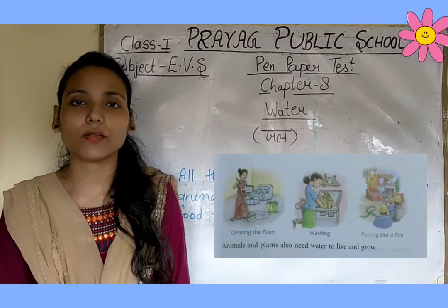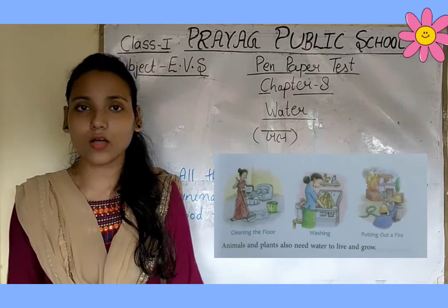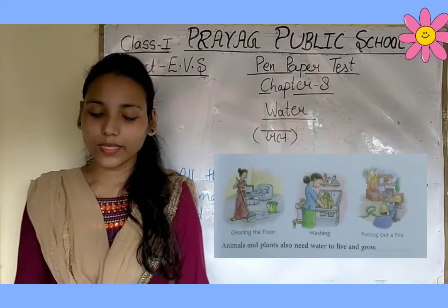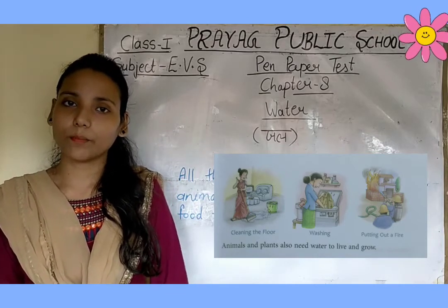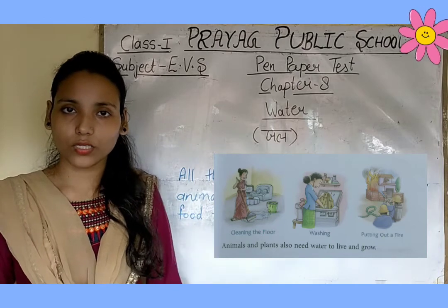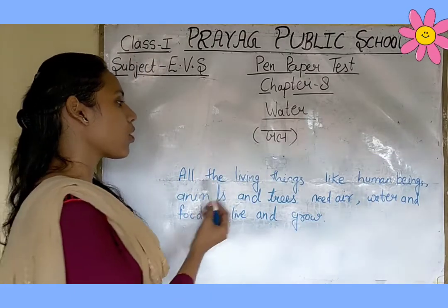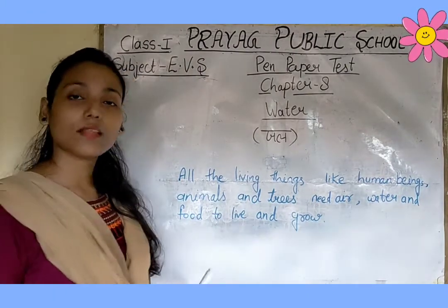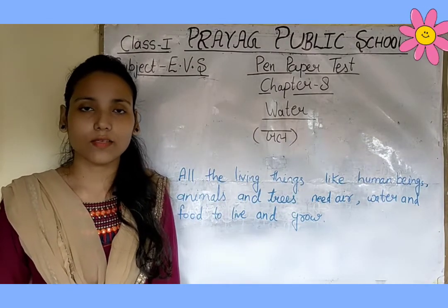जैसे कि आपने previous chapter में पढ़ा था, that air is needed for fire to burn — आग जलाने के लिए air की आवश्यकता होती है। वैसे ही आग बुझाने के लिए water की आवश्यकता होती है। Next: animals and plants also need water to live and grow. जानवर और पेड़-पौधे, इन्हें भी जीवित रहने और grow करने के लिए water की आवश्यकता होती है, because they are also living things. सभी living things को air, water and food की आवश्यकता होती है।